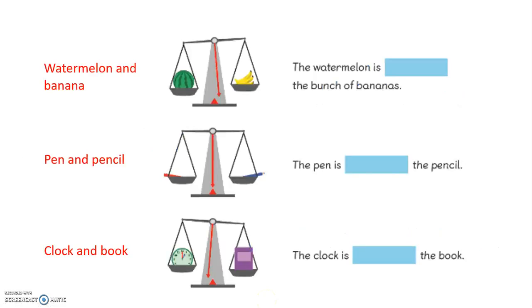Let's have a look one last time at what the children will be learning this week. They will be comparing objects. For example, they will be comparing pictures of a watermelon and a banana. They will decide what the missing words in these sentences are. For example, the watermelon is heavier than the bunch of bananas.